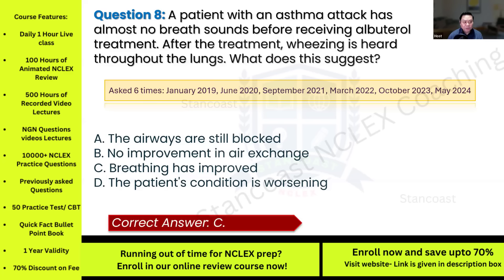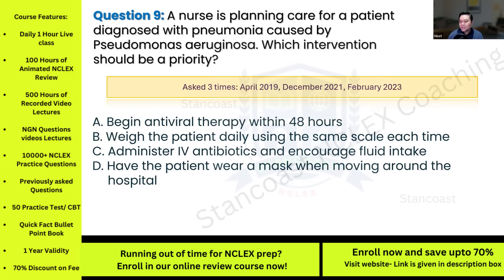Question nine: A nurse is planning care for a patient diagnosed with pneumonia caused by Pseudomonas aeruginosa. Which intervention should be a priority? This has been asked three times. Options: A) begin antiviral therapy within 48 hours; B) weigh the patient daily using the same scale each time; C) administer IV antibiotics and encourage fluid intake; D) have the patient wear a mask when moving around the hospital.